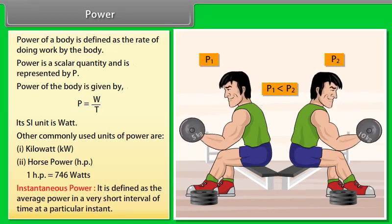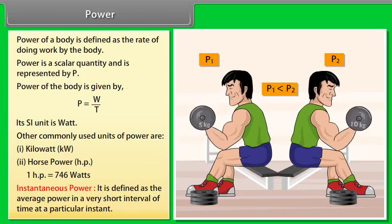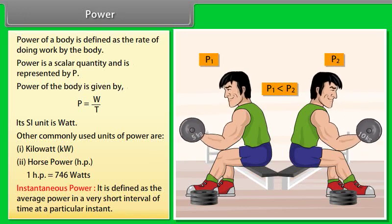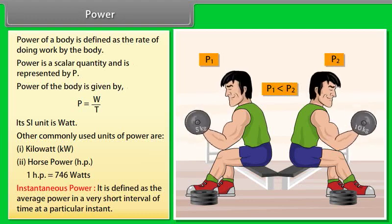Instantaneous power: It is defined as the average power in a very short interval of time at a particular instant.